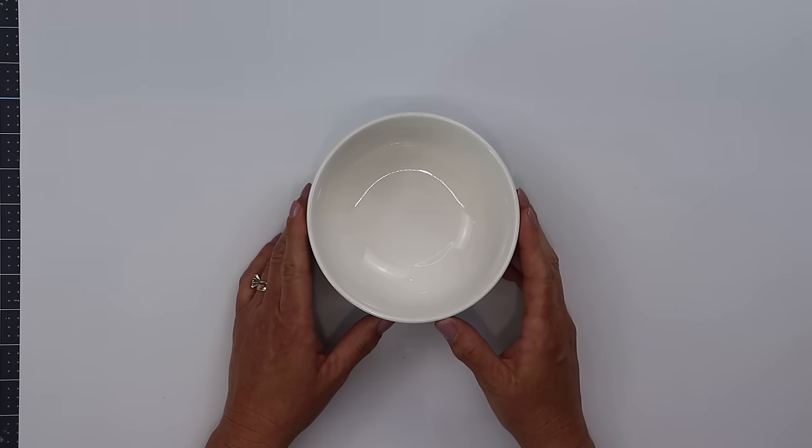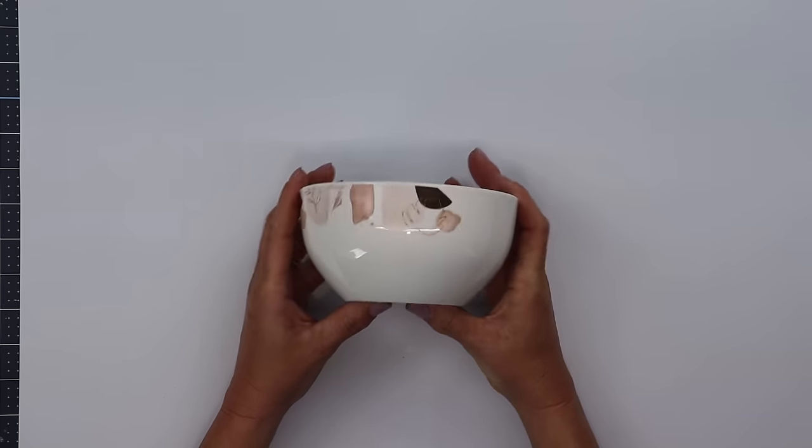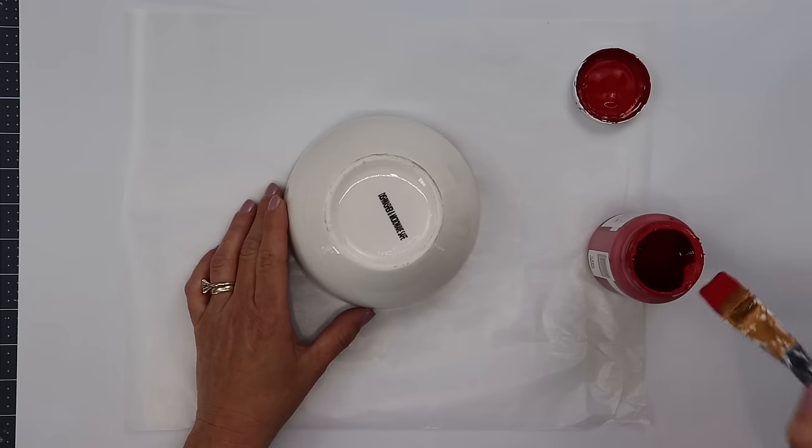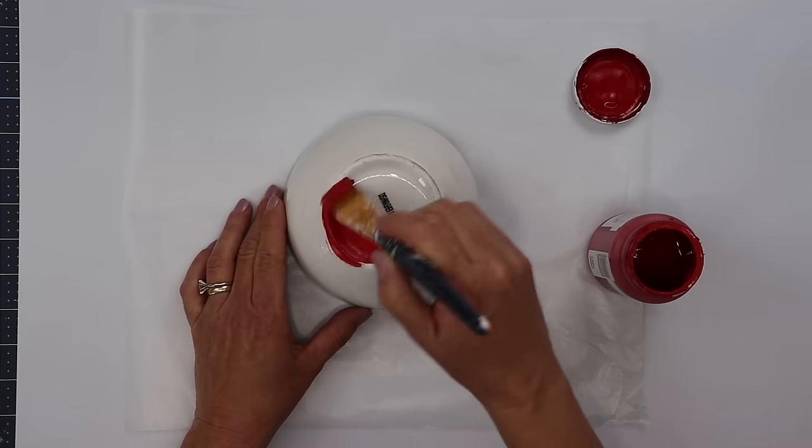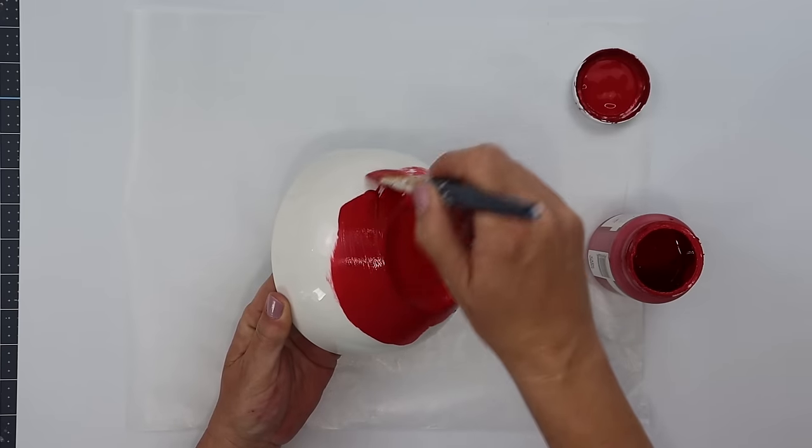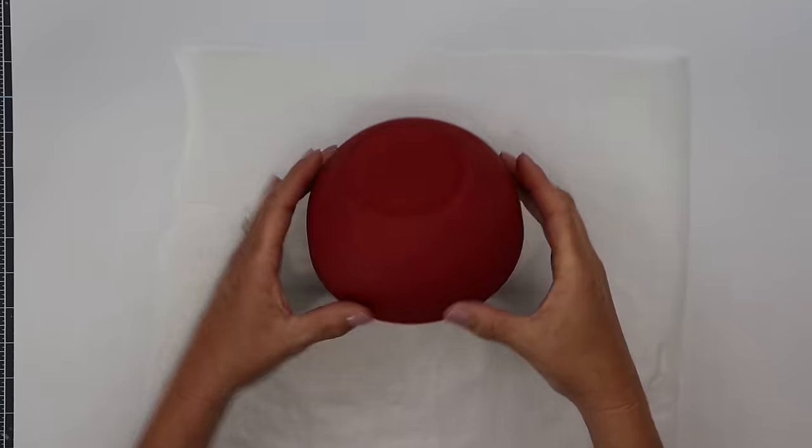Grab a bowl. Any bowl will do. I'm using a Dollar Tree bowl. This has a print on one side and it measures about five and a half inches across the top. I'm going to give this two coats of crimson chalk paint made by Waverly. It is going to give you the most beautiful deep red color.